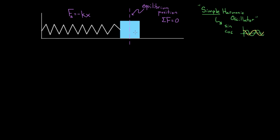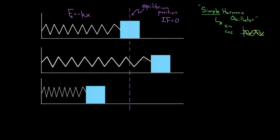Let's get some intuition about what's really going on for this mass on a spring. If the mass just sits at the equilibrium position, the net force is zero and it stays there — a boring problem. So let's say we pull the mass back a certain distance and let go. Since we released it at rest, the speed initially is zero. But the spring has been stretched and is going to try to restore the mass back to the equilibrium position.